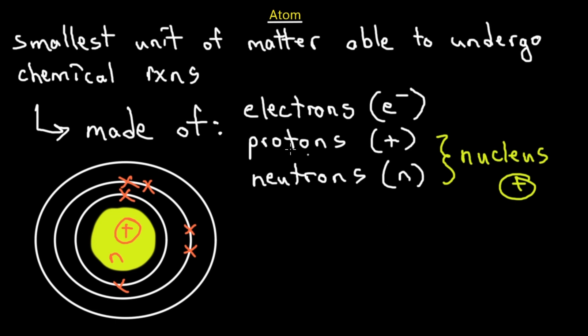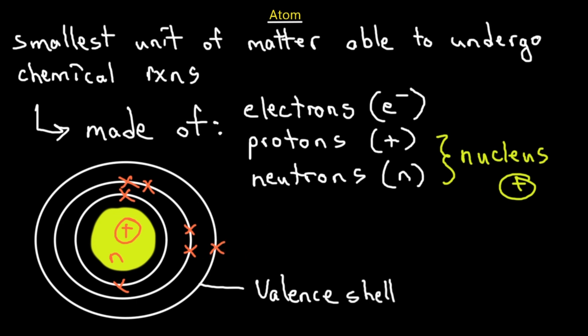Electrons go around in their shells. The outermost shell is called the valence shell, and the outermost electron is called the valence electron. Valence shells and valence electrons determine the reactivity of an atom or element. Elements like hydrogen, lithium, and sodium in the first period have just one valence electron, which gives them certain properties.